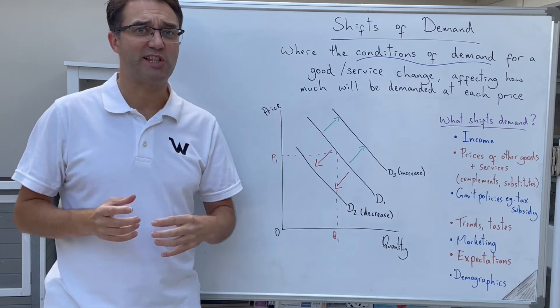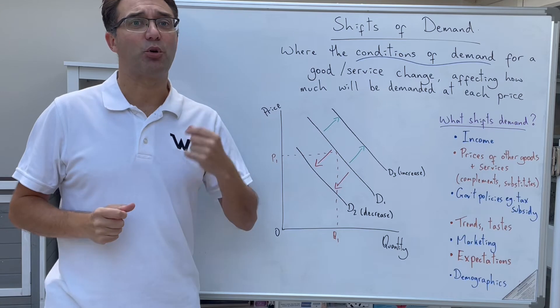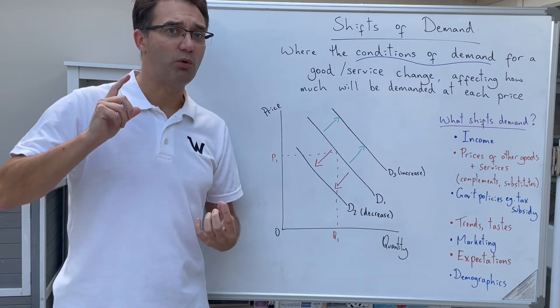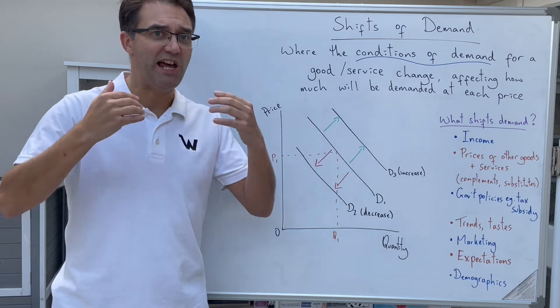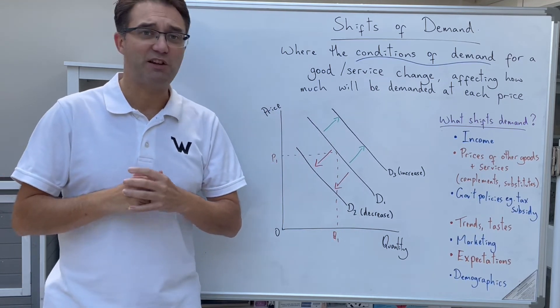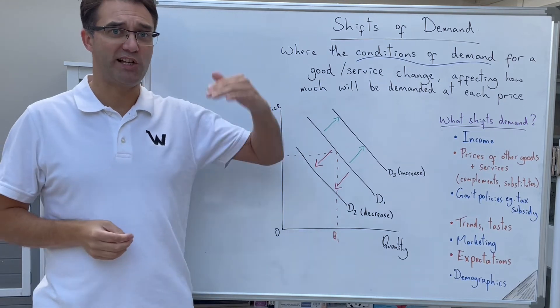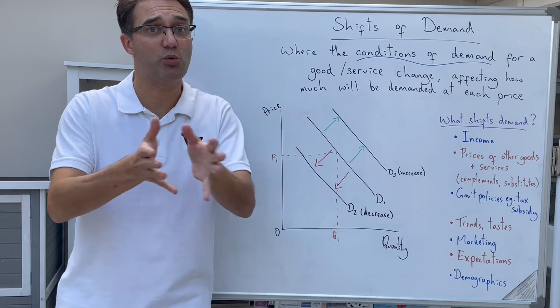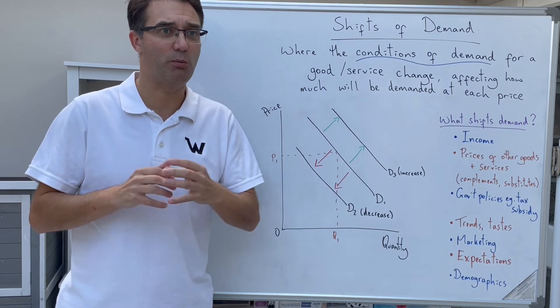Great example of complement goods is fish and chips. If the price of fish rises, people will buy less fish, but they're also likely to buy less chips because the two go together. On the other hand, if things were substitutes, it might be the price of fish rises, people might buy less fish, but they might switch to buying something else, for example, pies.